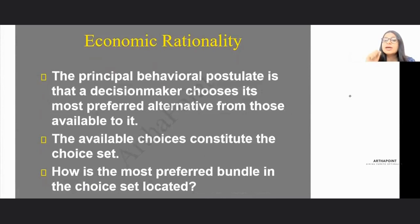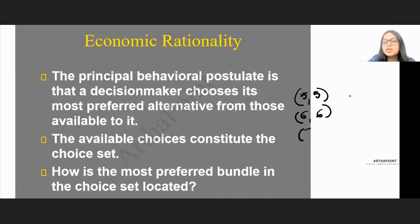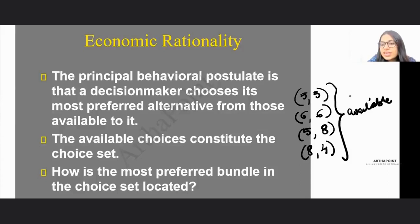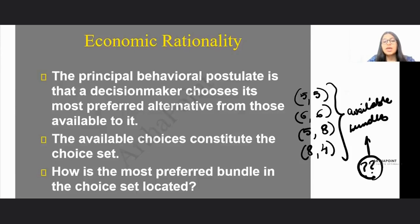The principal behavioral postulate is that a decision maker is always going to choose the most preferred alternative from whatever is available to him. For example, within my income, I have bundles (5,5), (6,6), (5,8), and (8,4) available to me. Given this list of available bundles, which should I choose? The answer is that I should choose the bundle which gives me the maximum utility.